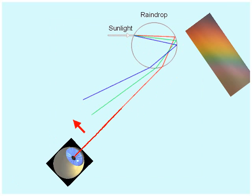So if a raindrop is high up above you, and you're looking at it this way, you'll see the red light coming out of it. And that raindrop will look red to you.